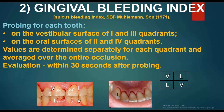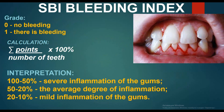SBI — Sulcus Bleeding Index (Mühlemann and Son, 1971): probing on the oral surface of second and fourth quadrants, values determined separately for each quadrant and averaged within 30 seconds after probing. Grade 0: no bleeding. Grade 1: there is bleeding. Calculation: amount of points divided by number of teeth multiplied by 100%. Interpretation: 100 to 50% — severe inflammation; 50 to 20% — average degree of inflammation; 20 to 10% — mild inflammation of the gums.